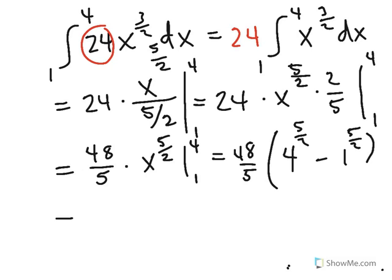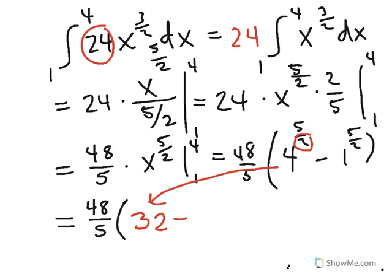So if you remember your rules for exponents, and by the way, this would make a really great non-calculator AP question. We're going to have 48 fifths, and now we're going to take the square root of 4, that's the 2 in the exponent right here. So we have the square root of 4, that's 2. 2 to the 5th power is 32 minus 1, and 1 to any power is just 1.